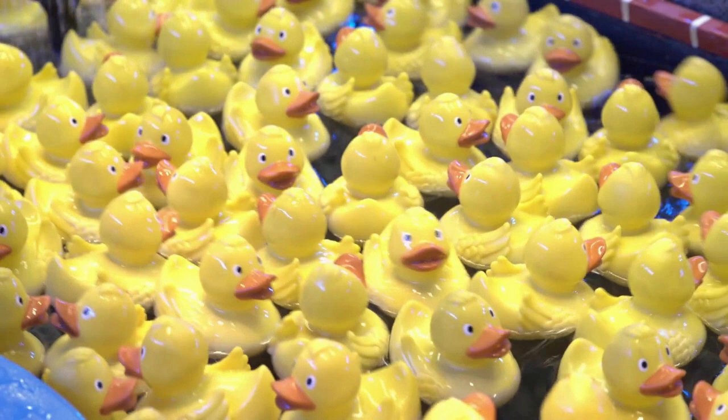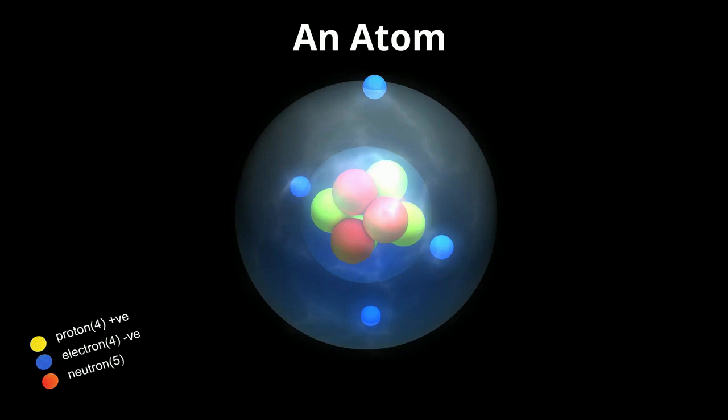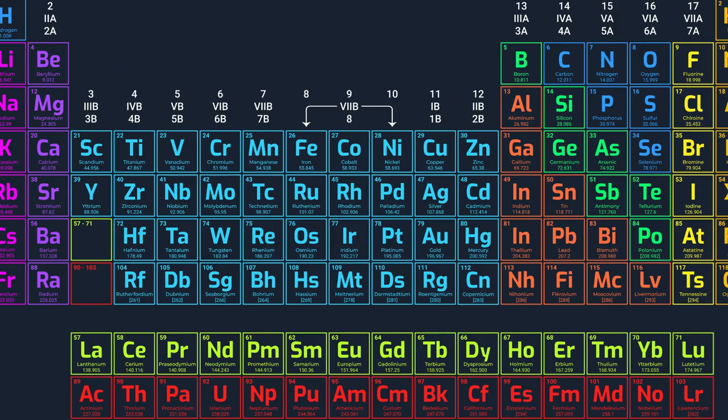Most of the matter in the universe is made up of atoms. A substance that is made up of only one kind of atom is called an element. You can find all the elements in the periodic table of elements.